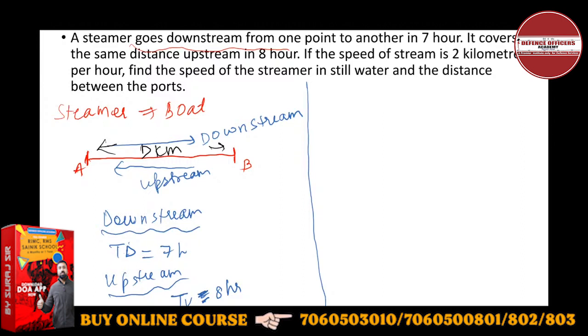The speed of stream is given to you. Speed of stream SS is two kilometers per hour. What you have to find? You have to find the speed of boat. It's very easy.